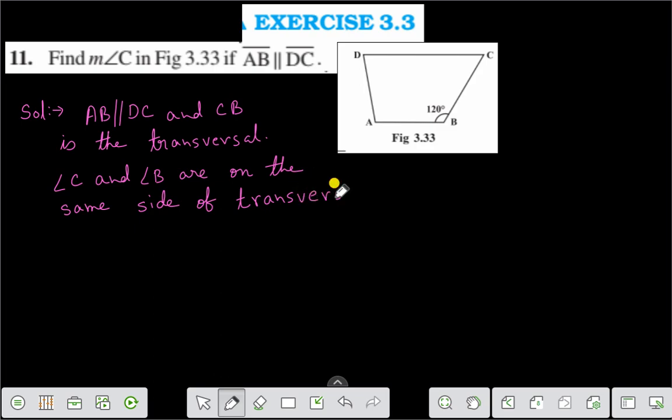Therefore, you can write that angle C plus angle B is equal to 180 degrees. Or angle C plus 120 degrees is equal to 180 degrees.